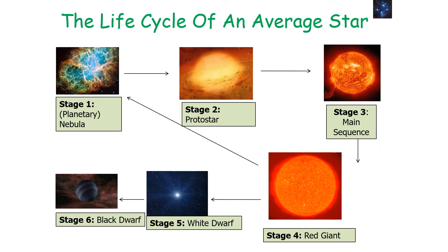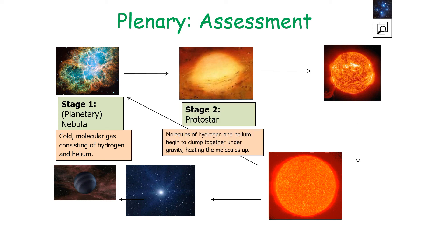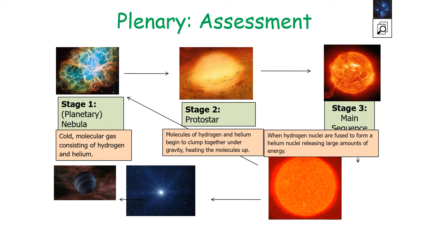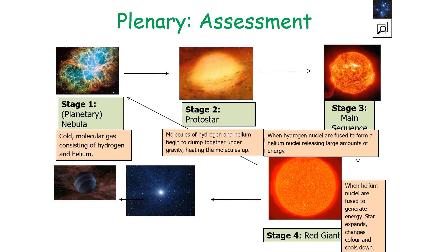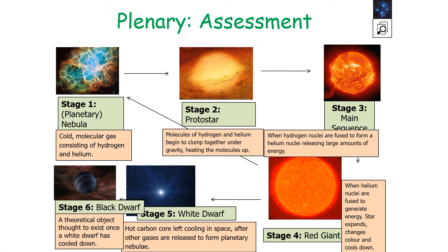Here is the life cycle of an average star in six stages. Stage one: the planetary nebula — cold molecular gas consisting of hydrogen and helium from the Big Bang. Stage two: the protostar — hydrogen and helium molecules clump together under gravity, heating up. Stage three: the main sequence — hydrogen nuclei fuse to form helium, releasing large amounts of energy. Stage four: the red giant — helium nuclei fuse, the star expands, changes colour, and cools. Stage five: the white dwarf — the hot carbon core cools in space after other gases form a new planetary nebula. Stage six: the black dwarf — a theoretical object formed once the white dwarf has cooled completely.